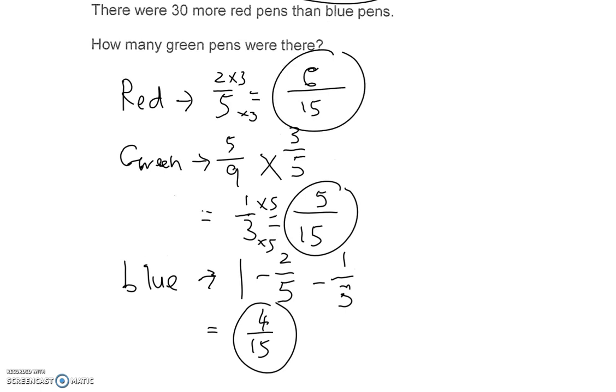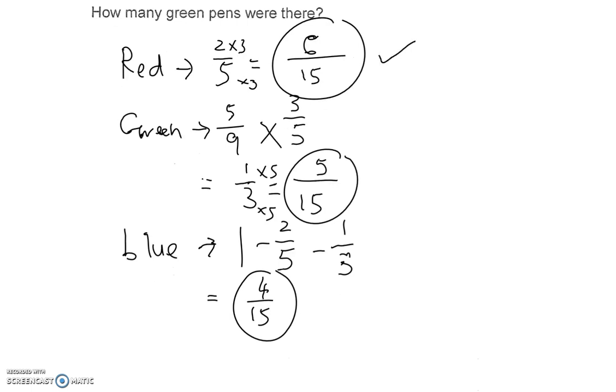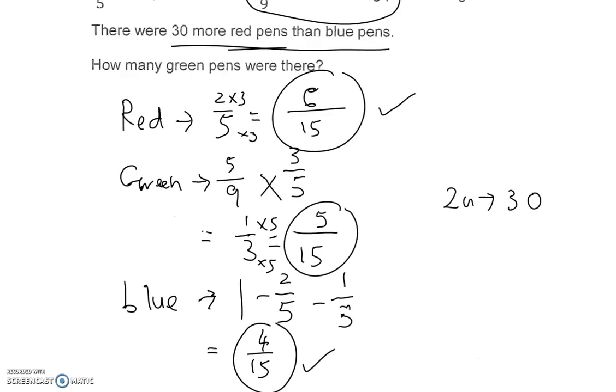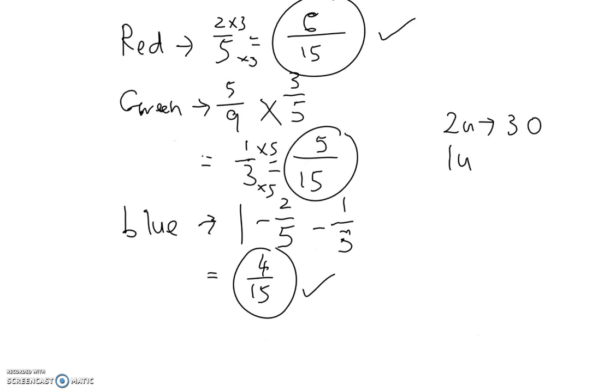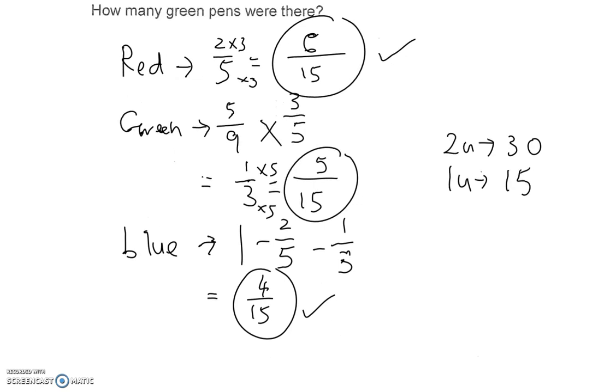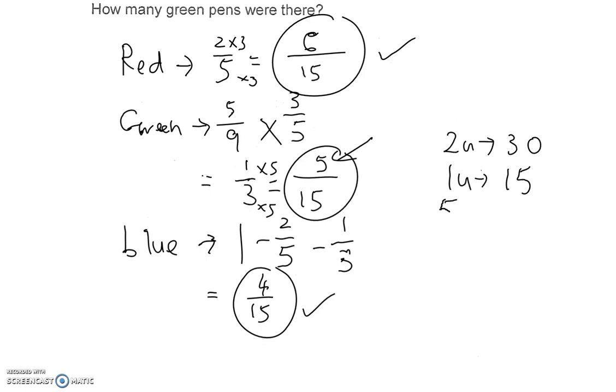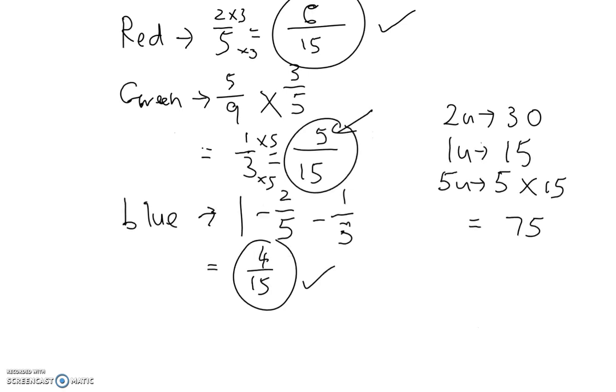Okay, they said that there are 30 more red than blue. 30 more red than blue. Red and blue is here. So the difference is actually 6 minus 4 gives you the 2 extra units, which is 30 pens, 30 more. 30 more red pens. So 1 unit will be divided by 2, you get 15. We are interested in green. Green, there are a total of 5 units. There will be 5 times 15, which gives us the answer 75.